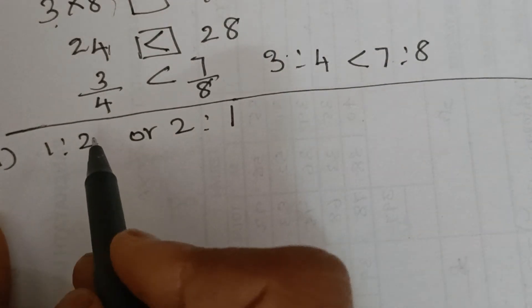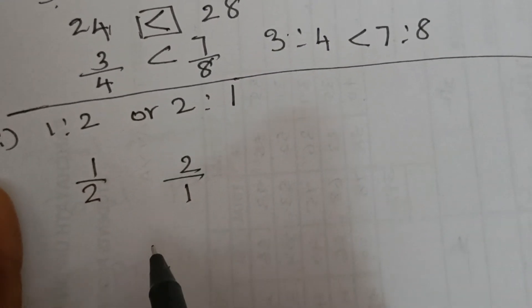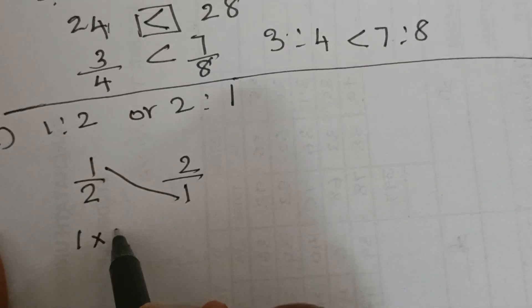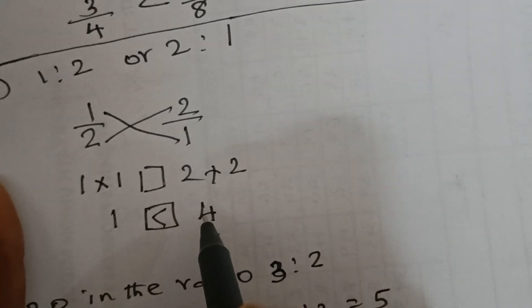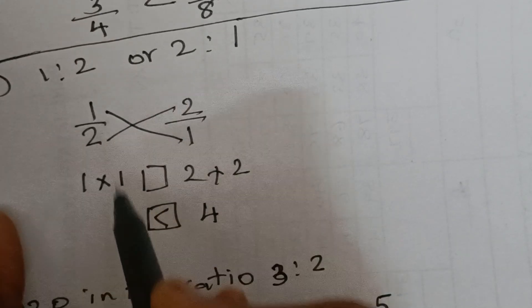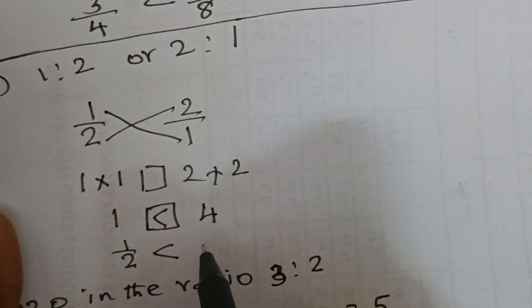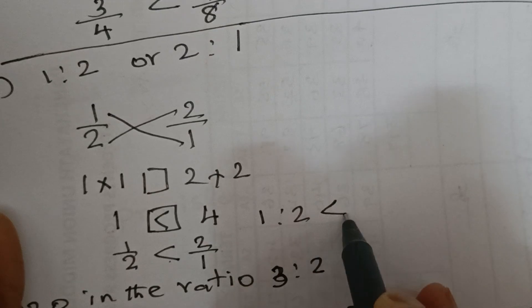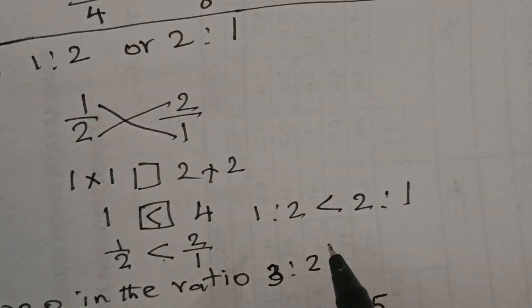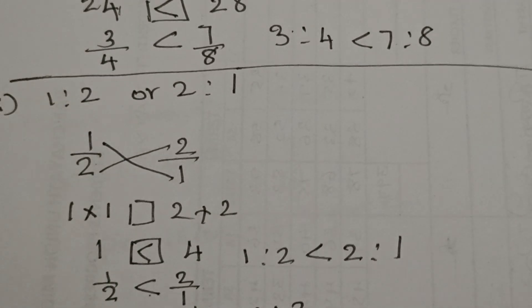For the third comparison: 1 is to 2 means 1 by 2, and 2 is to 1 means 2 by 1. Cross multiply: 1 into 1 is 1, and 2 into 2 is 4. 4 is greater, so the second ratio is greater. Therefore, 1 is to 2 is less than 2 is to 1. I hope you have understood the concept of equivalent ratios and the rest of the sums. We will do them in the next video. Thank you all for watching.